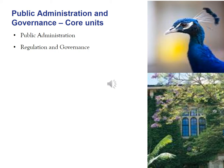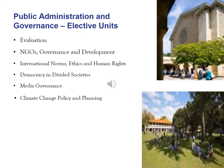Many of the units in this specialization are taught in intensive mode over a couple of weeks, rather than the full 12-week period. The purpose is to help you better integrate and balance your study with work, family and other commitments. The public administration and governance specialization offers six electives, and you need to choose two to specialize.